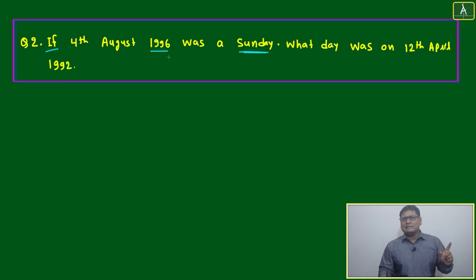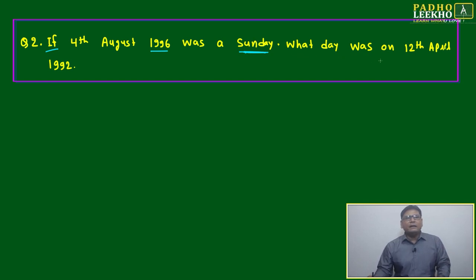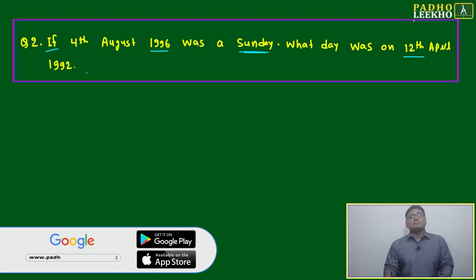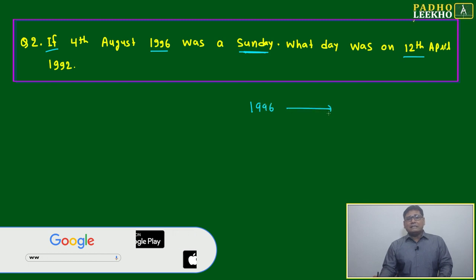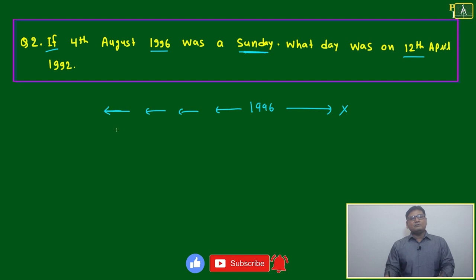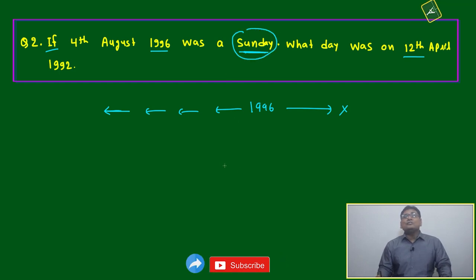From the question: 1996 is a leap year, 4th August is after 29th February, and this day was a Sunday. Now we are moving to find 12th April 1992. Since we are moving from 1996 backward to 1992, whatever number of days will be there, it will be subtracted, because we know the information about 1996, not 1992.